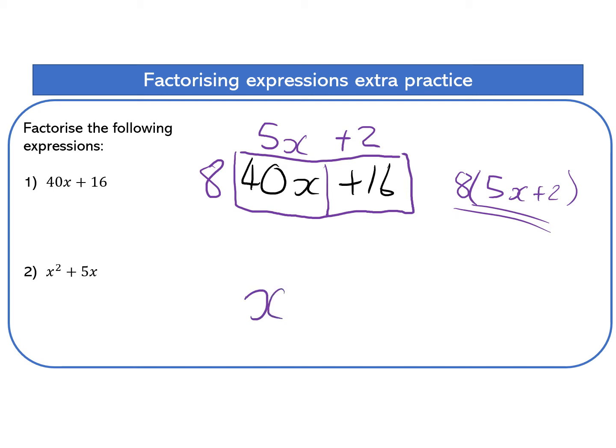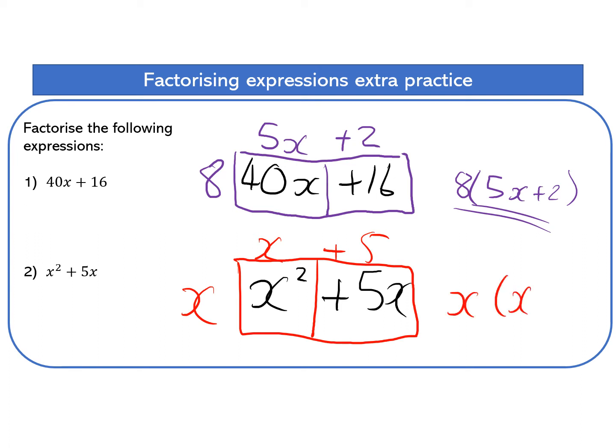Question two. I've got X squared plus five X. Again, I'm going to box that. What goes into both sides? I can see it's X. X times X is X squared. X times five is five X. And there goes my bracket. Again, that's complete.